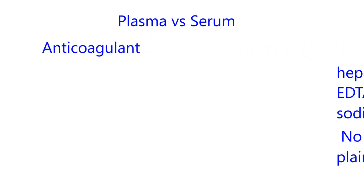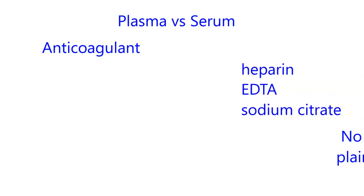If you have an anticoagulant present in the syringe or the tube that you're collecting blood, that's going to prevent the blood from clotting. Then after centrifugation, you get plasma from that sample. So if you have an anticoagulant and you spin the blood, you get plasma. What are some common anticoagulants?